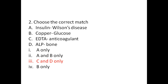Second question: choose the correct match. Option A: insulin and Wilson's disease. Option B: copper and glucose. Option C: EDTA and anticoagulant. Option D: ALP and bone test. The answer is C and D. Wilson's disease is a rare inherited disorder causing copper to accumulate in the liver, brain, and other vital organs. Insulin is a hormone produced by the pancreas that controls the amount of glucose in the bloodstream, so insulin and Wilson's disease is not a correct match.